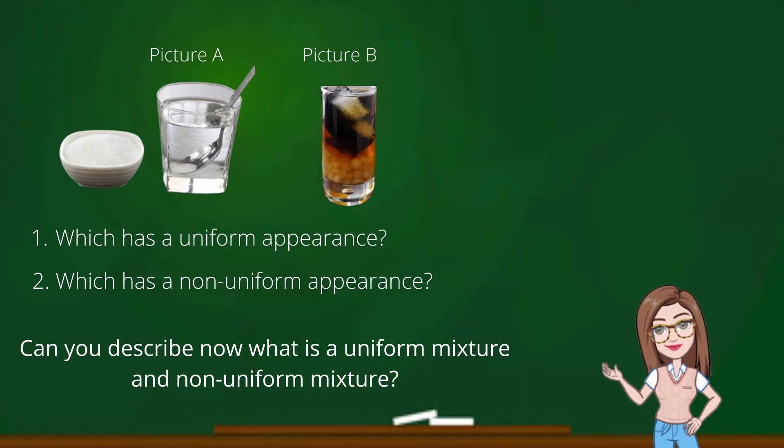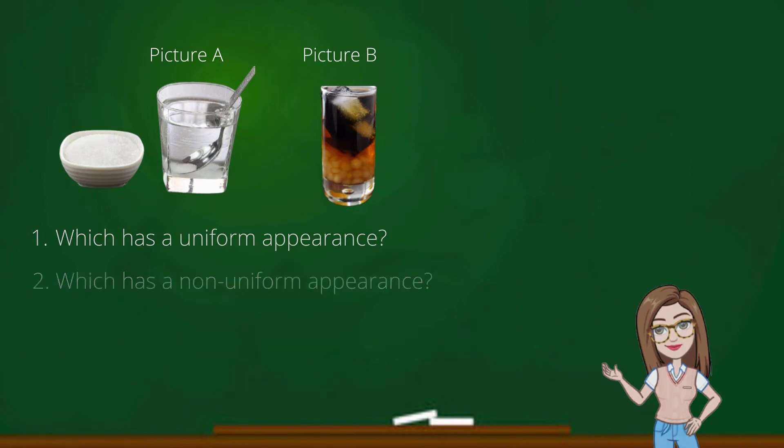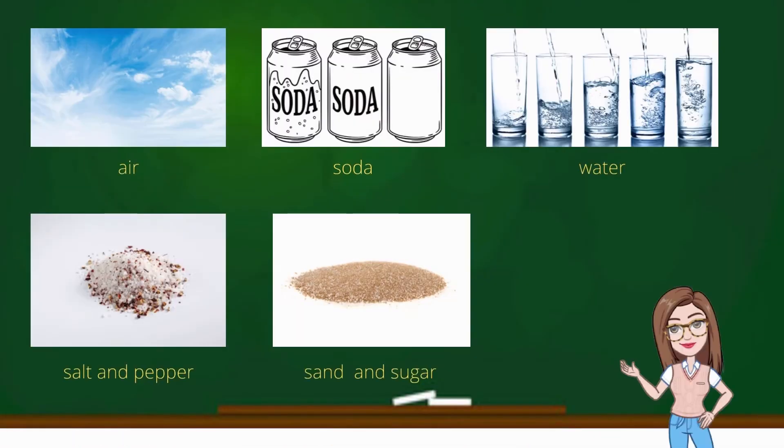Which has a non-uniform appearance? Correct! Picture B, which is sago and gulaman, has a non-uniform appearance. Can you describe now what is a uniform mixture and non-uniform mixture?